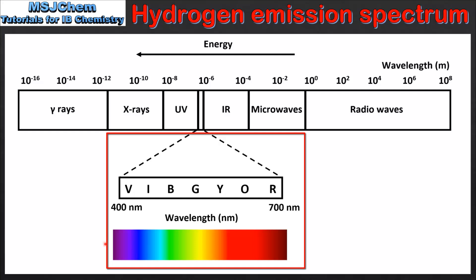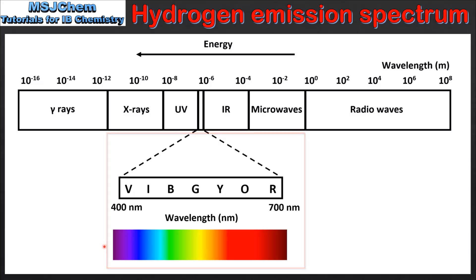In the emission spectrum that we saw in the previous slide, the wavelengths of light emitted fall within this region. So next we'll look at how the specific wavelengths of light are emitted.